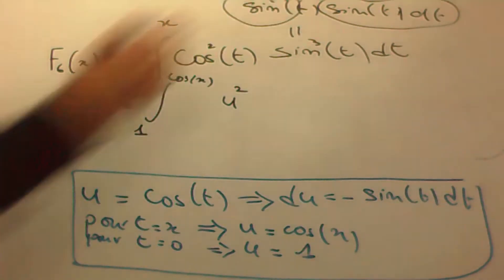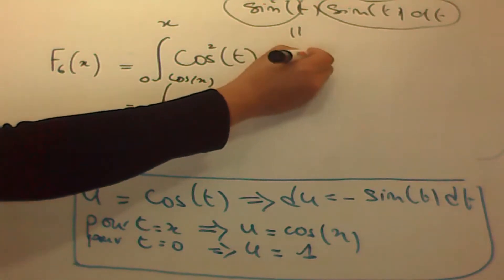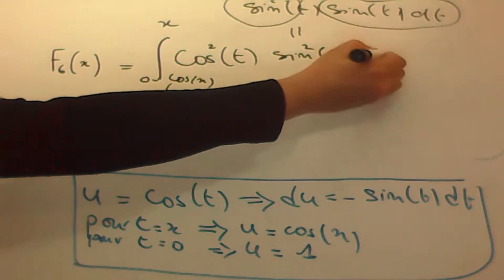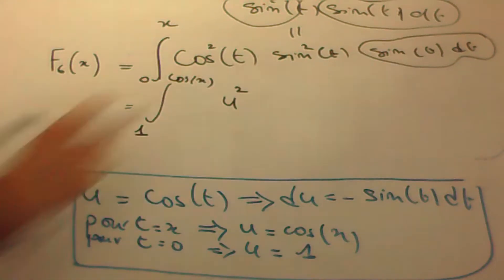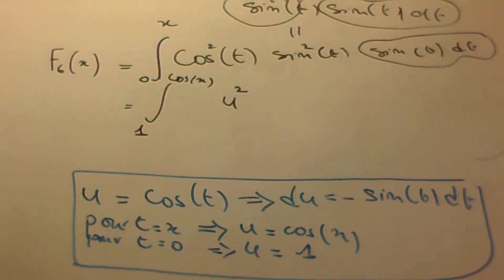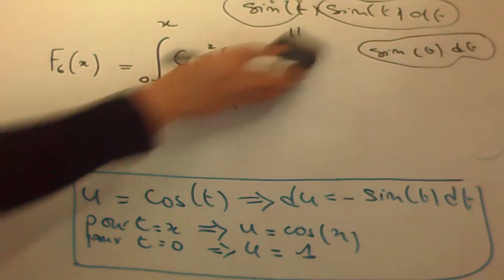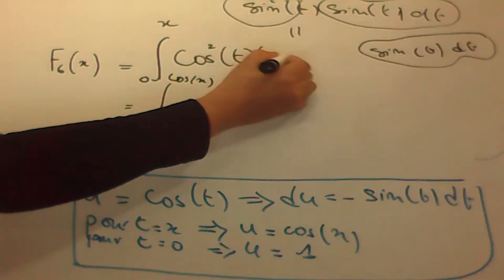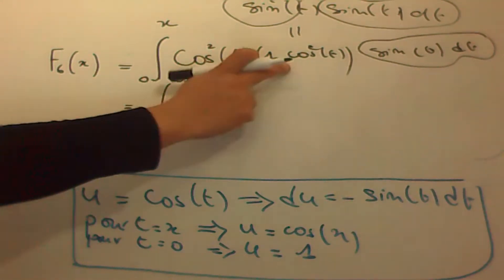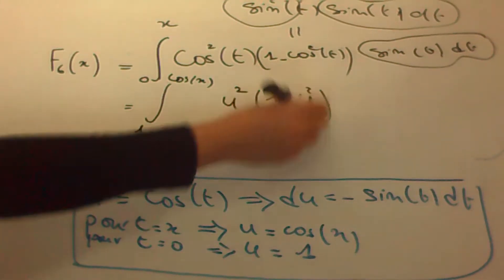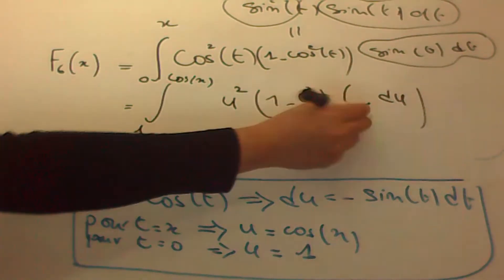Reste à modifier sinus au carré de t. On a vu que sinus au carré de t c'est 1 moins cosinus au carré de t — c'est une loi connue. Donc je peux écrire sinus au carré comme 1 moins u au carré. On obtient u au carré fois (1 moins u au carré) fois moins du.